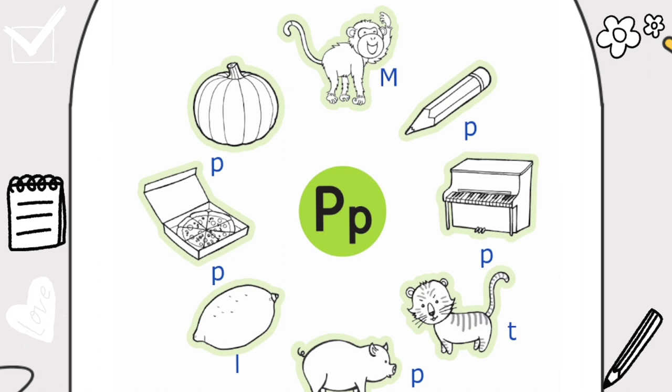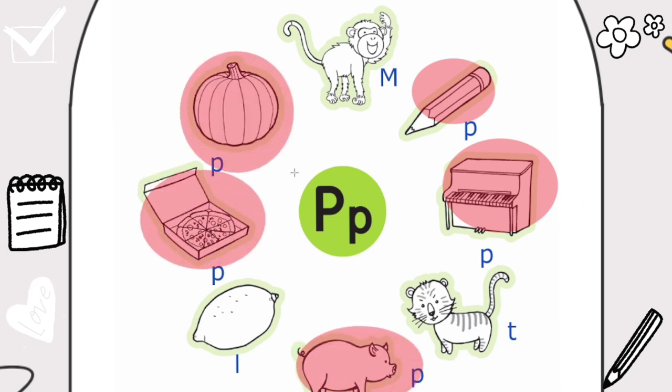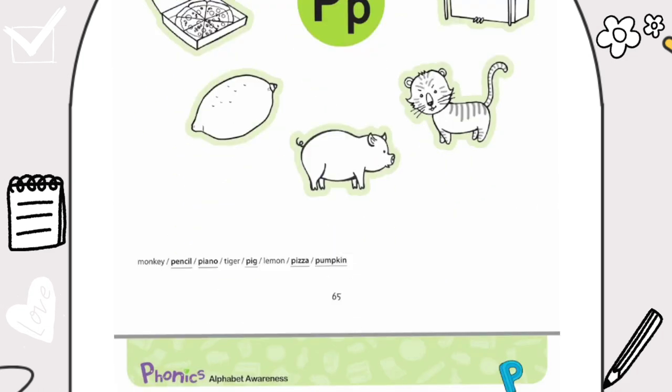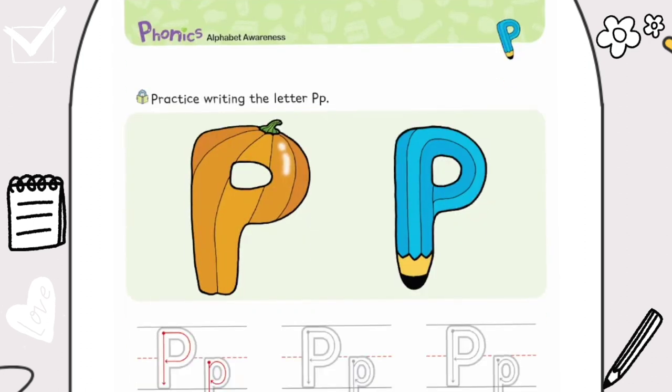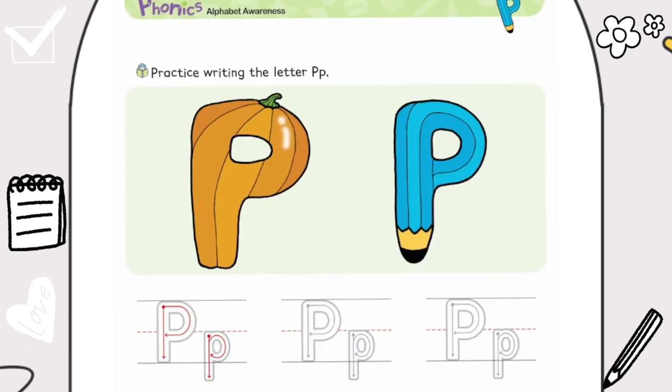Now, let's circle all the words that begin with P. P-P-P. Alright. P-P-Pencil. P-P-Piano. P-P-Pig. P-P-Pizza. P-P-Pumpkin. Yes, awesome.